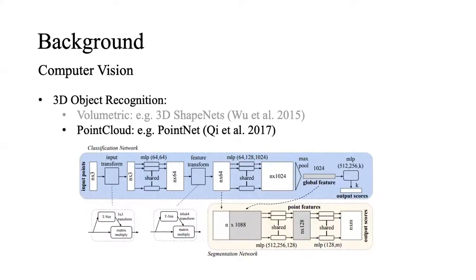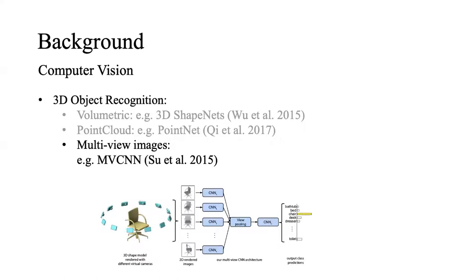Later, PointNet has used symmetry functions to aggregate information from each point, hence achieve invariance to the ordering of the points and achieve better results in 3D recognition. Multi-view images are also explored as a representation of the input images.